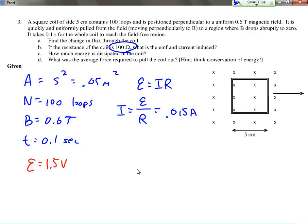But what's the direction of the current? Well, as the loop is exiting the field, the magnetic flux is getting weaker. Therefore, the loop itself will want to create its own magnetic flux into the page as it's being pulled out. So if you end up using your hand rule, you'll see that the current is going to be in the clockwise direction.